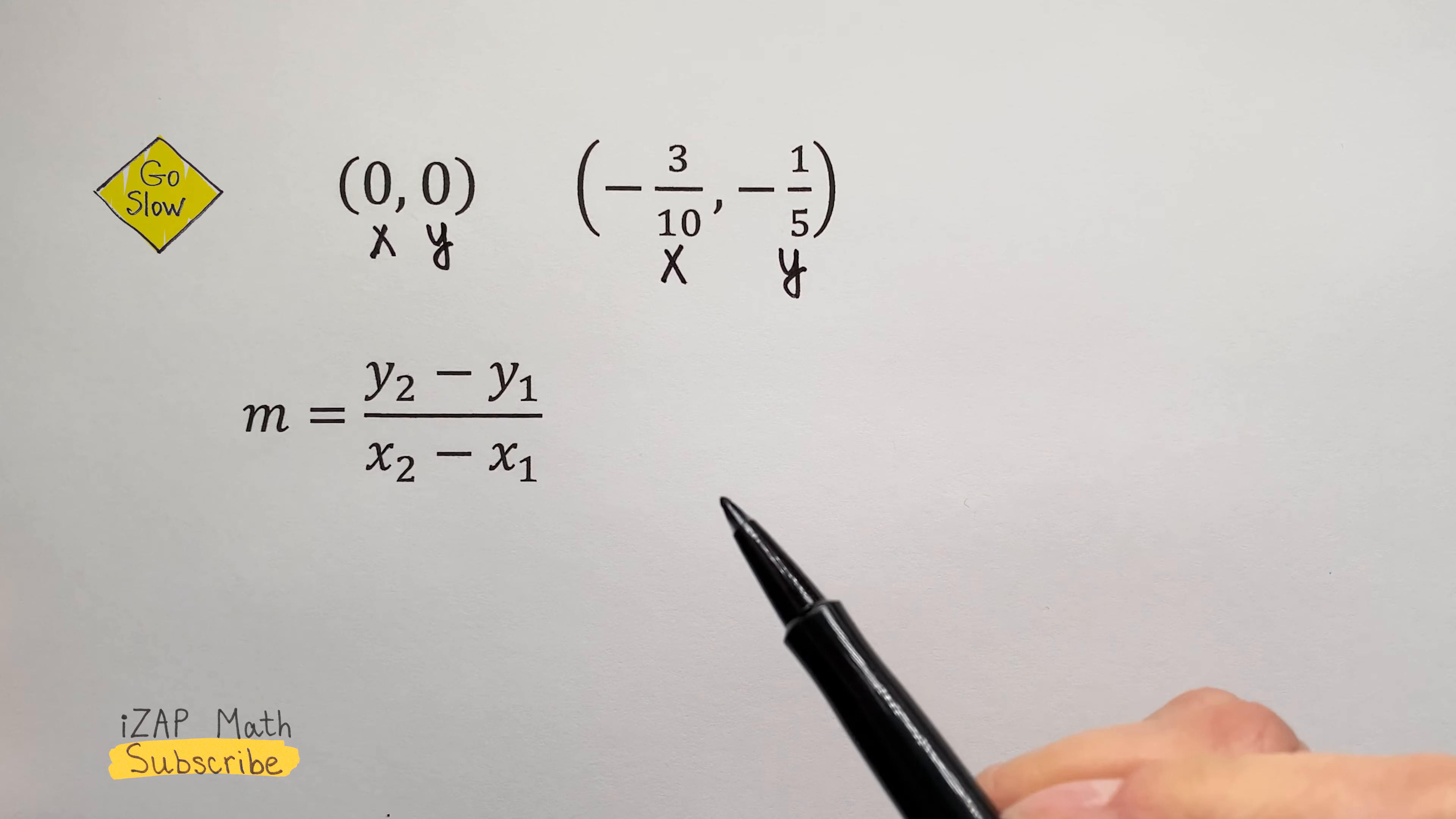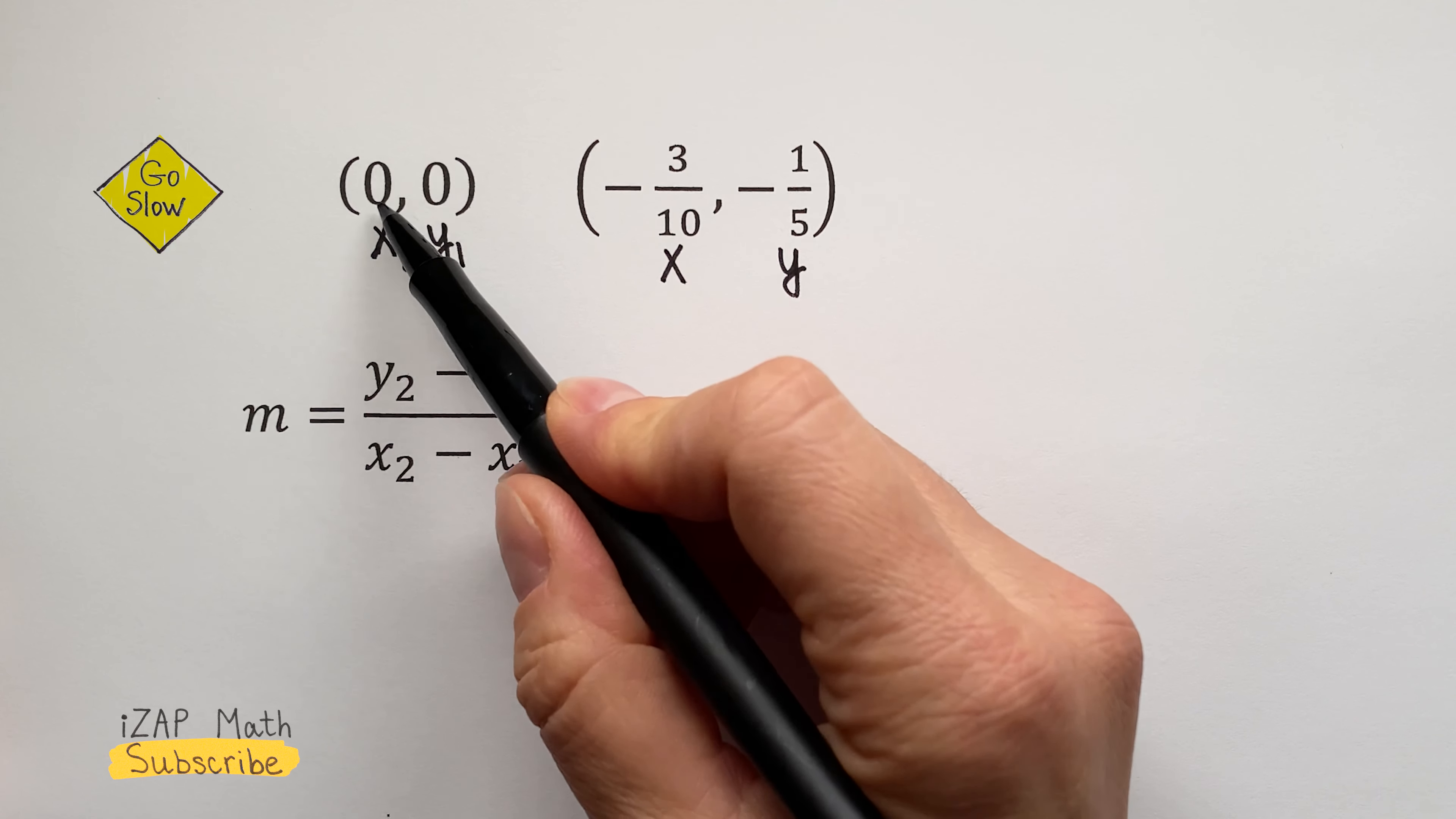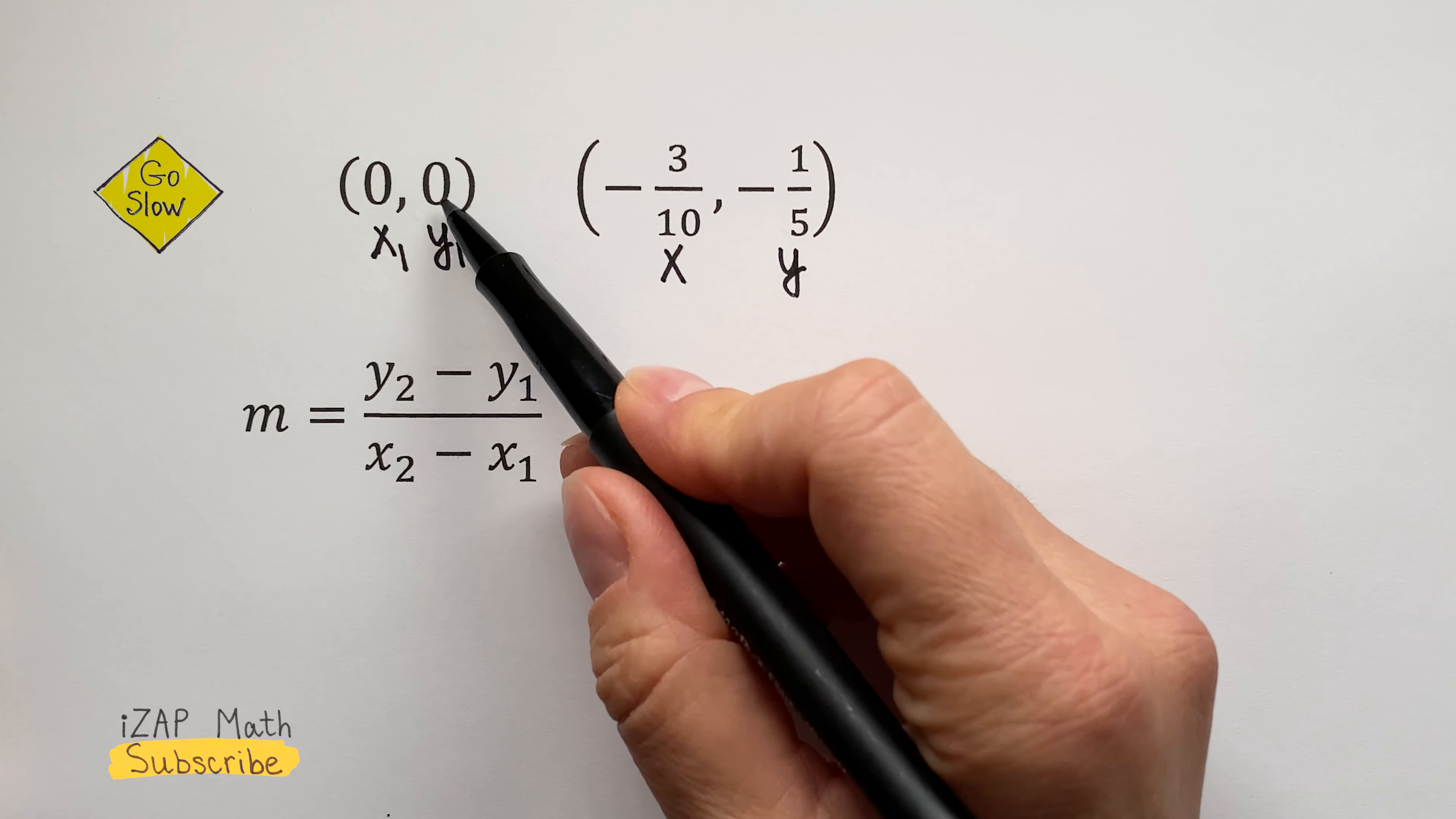To distinguish between the points, let's label the first point as x1, y1. Then x1 equals 0, and y1 equals 0.